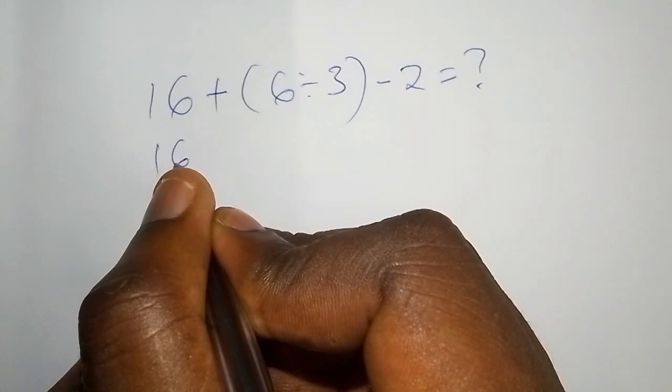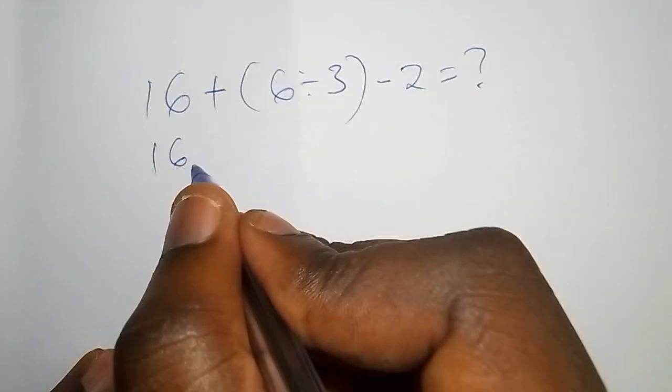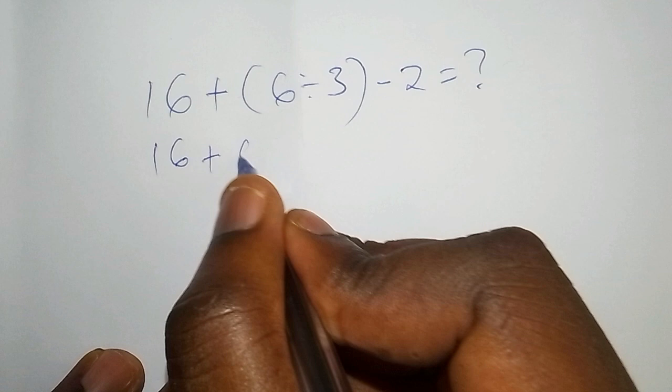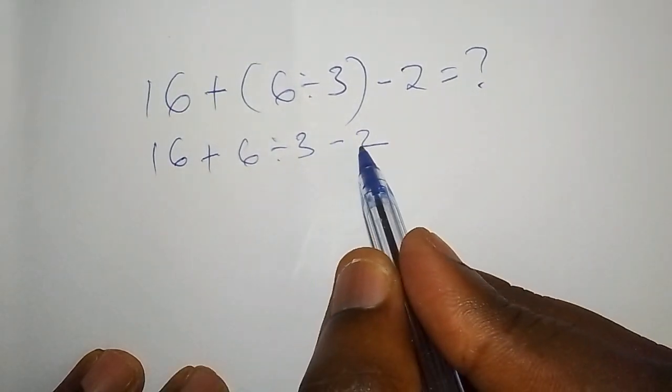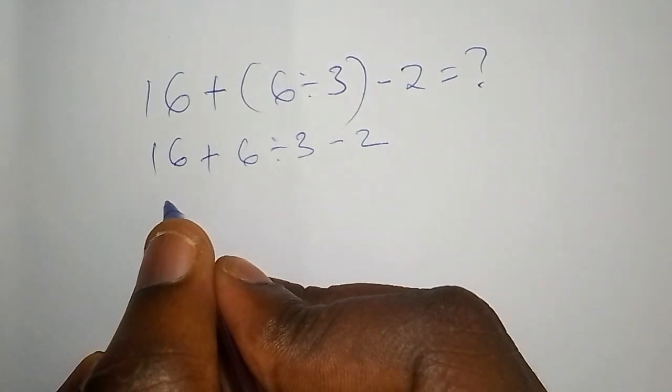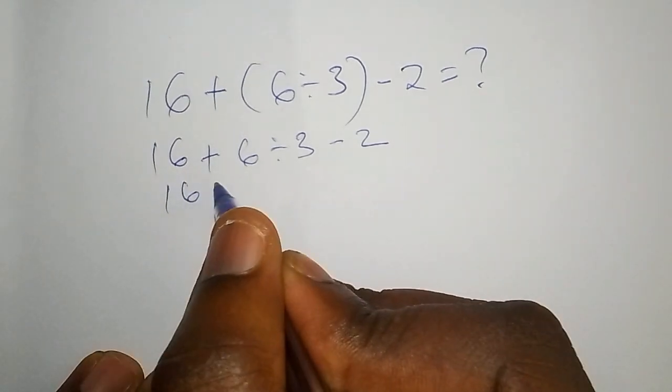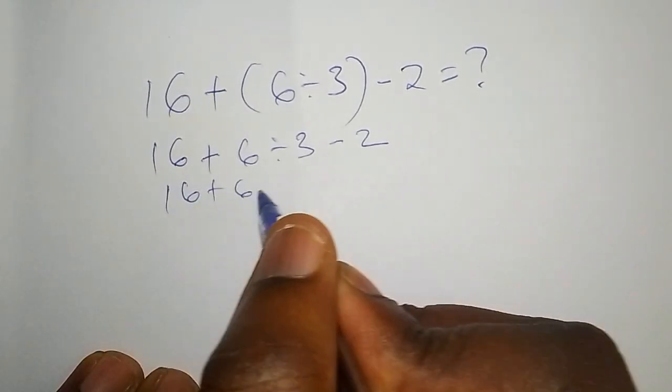Don't try it by saying that we have 16 + 6 ÷ 3 - 2. You've just rearranged it. Now the mistake comes where you say 16 then add 6 directly to get 22.